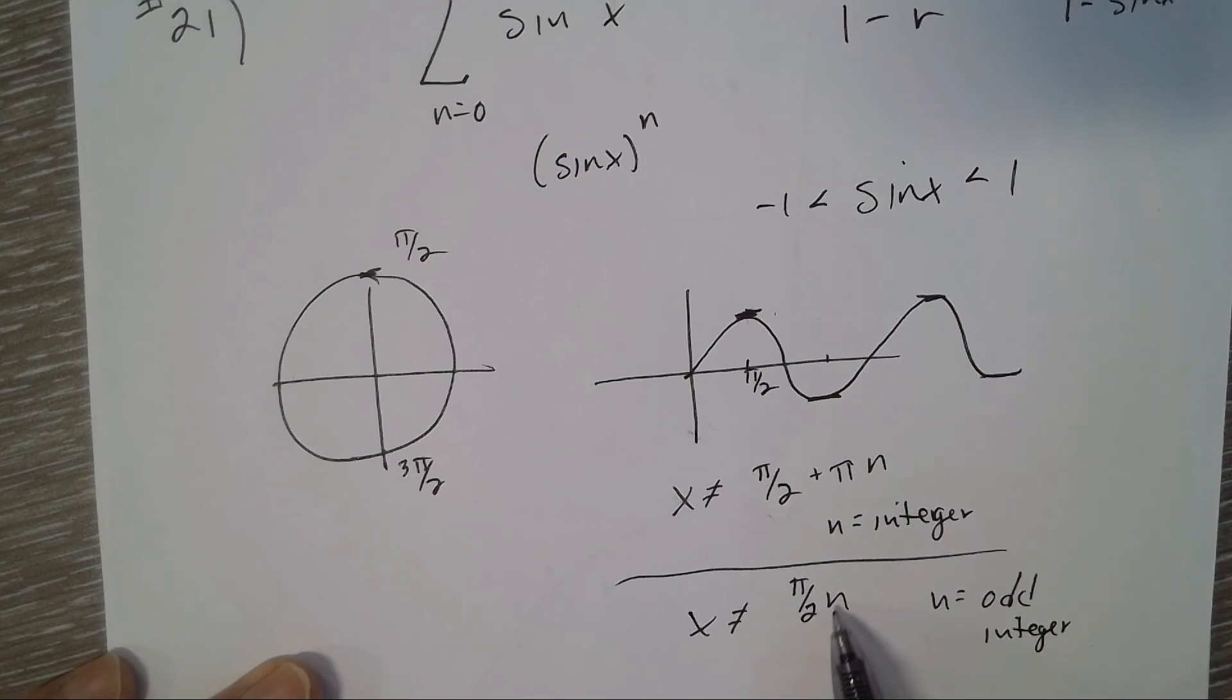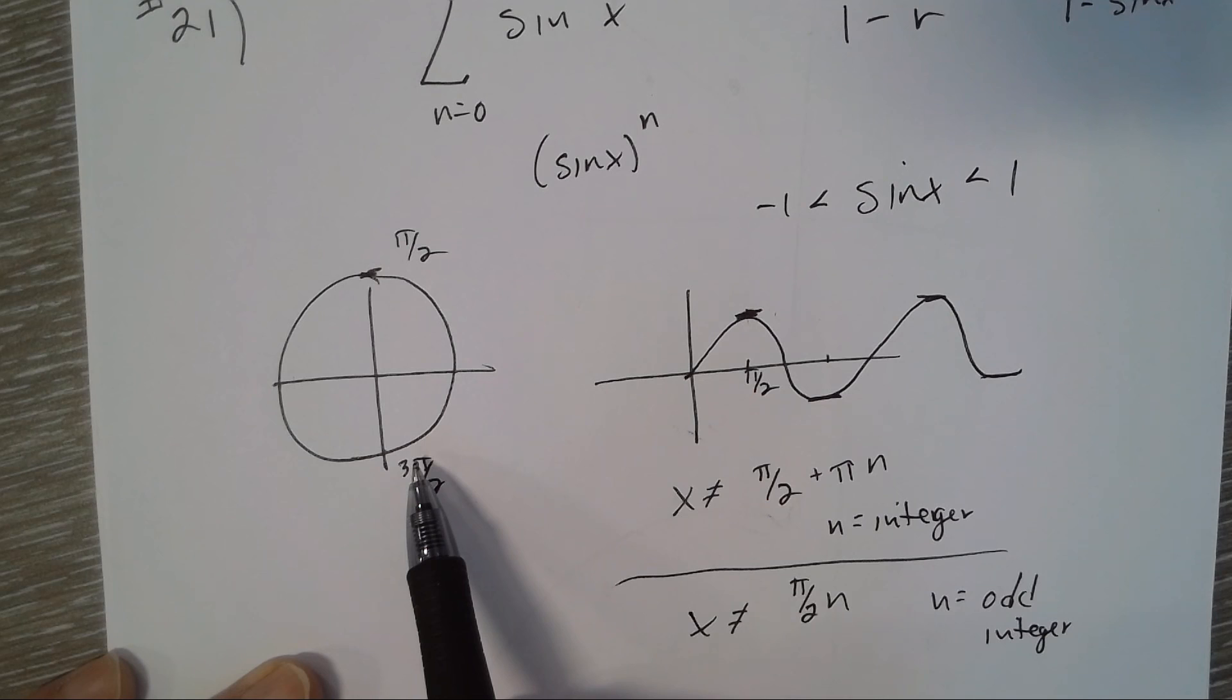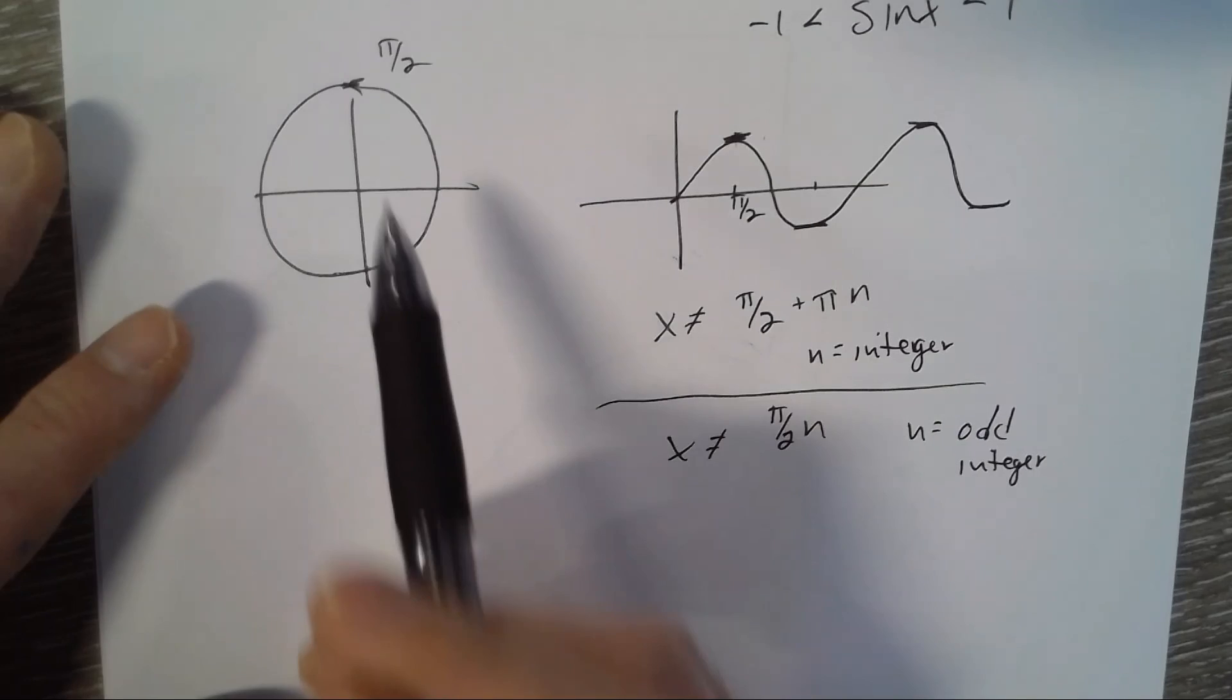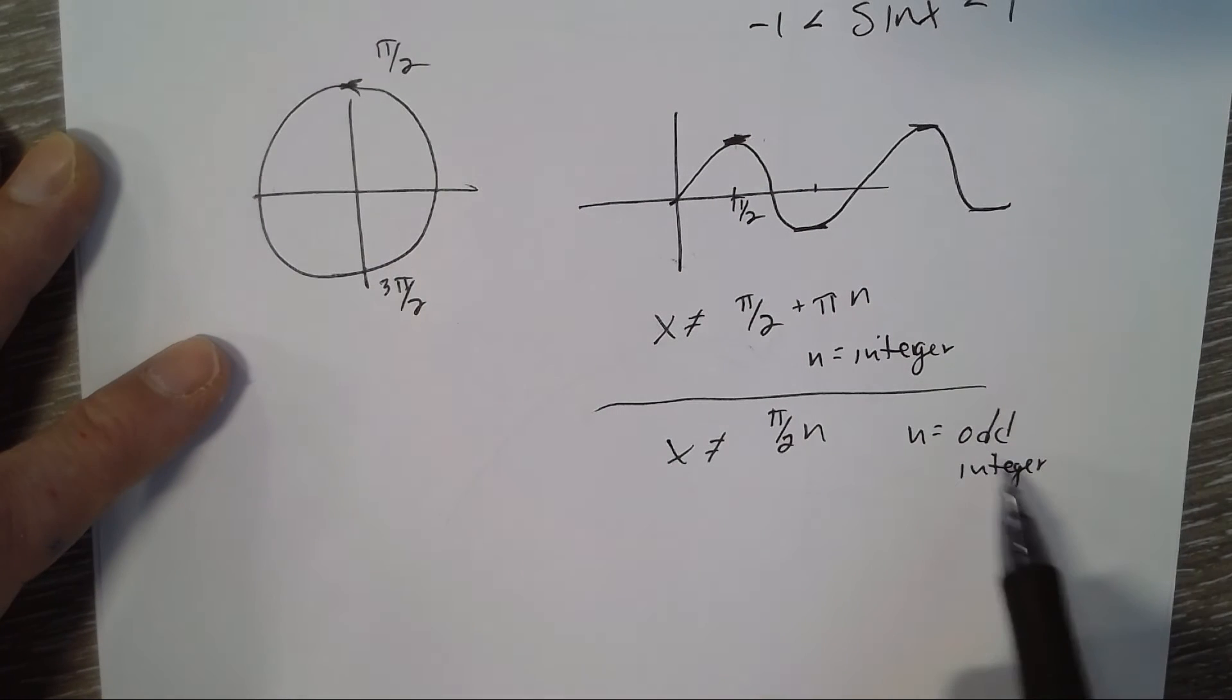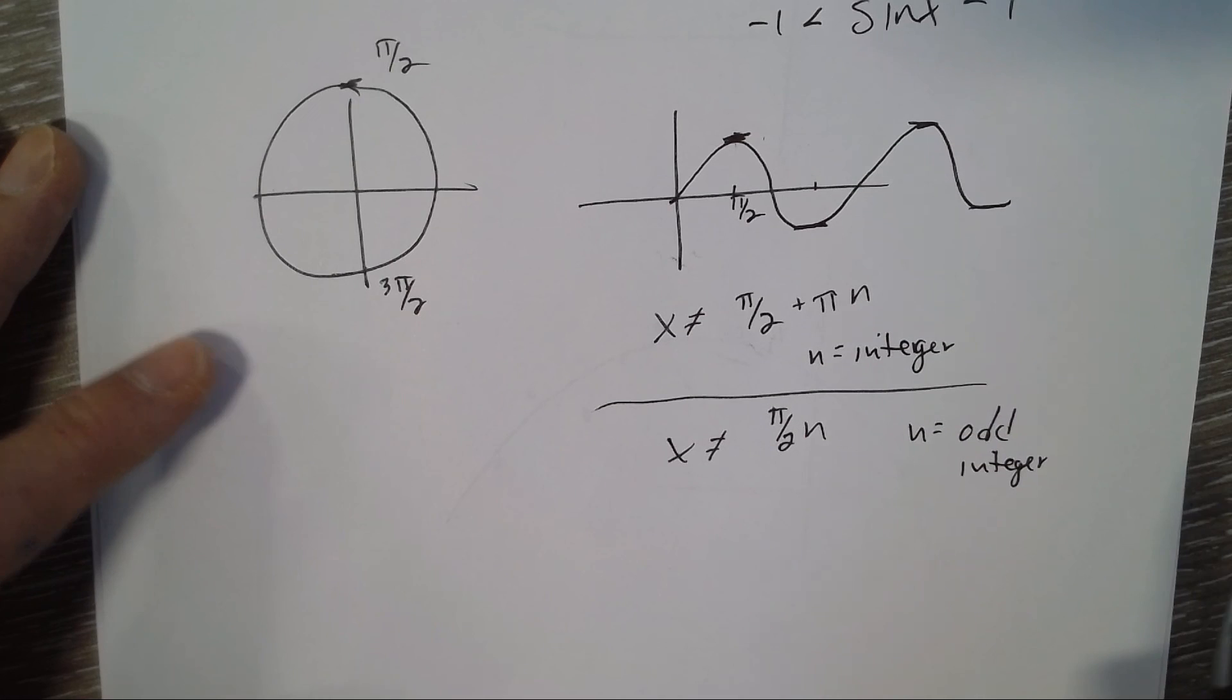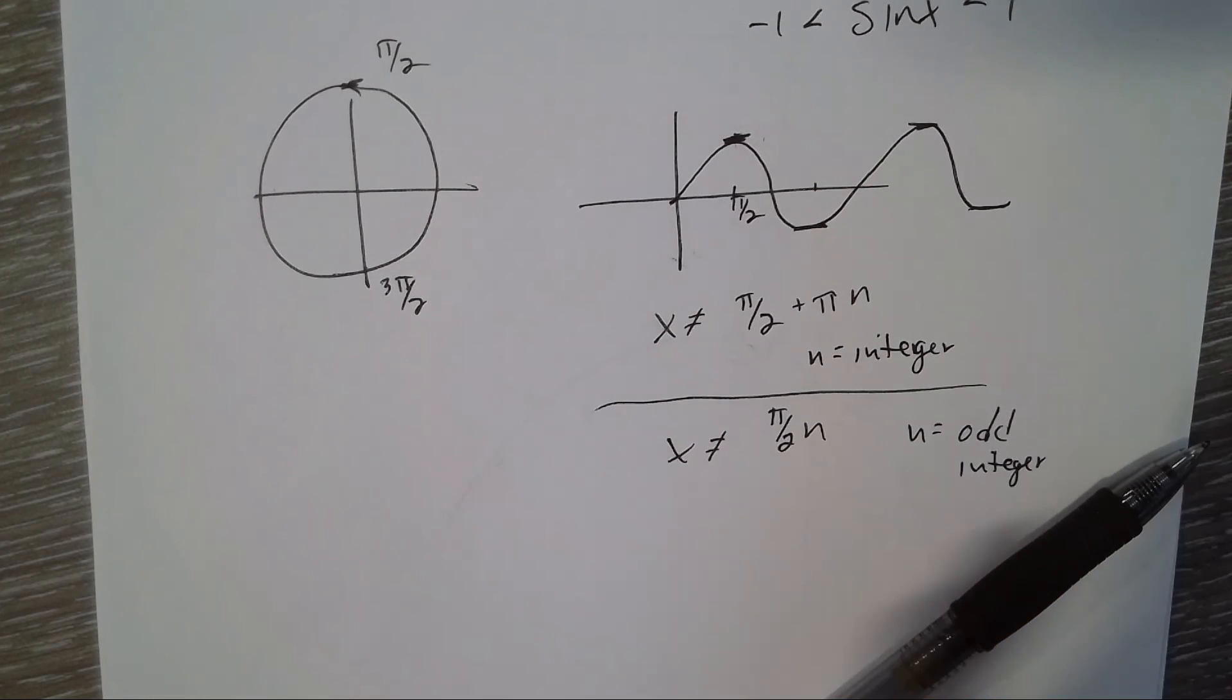So if n is 1, yeah, we're at π over 2. If n is 3, then we're at 3π over 2. If n is 5, right here to 5π over 2, and so on. So these are literally the same thing, however you want to represent it. So it would converge for all values except for those.